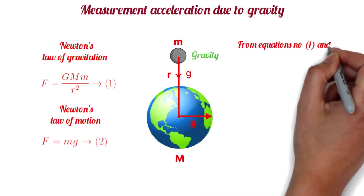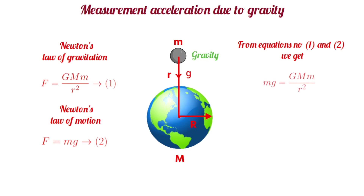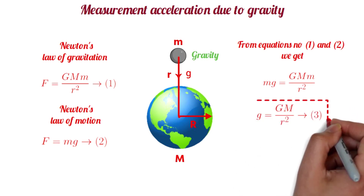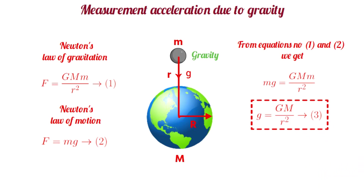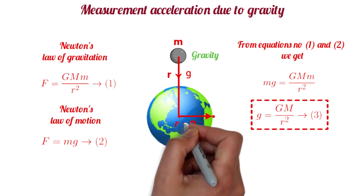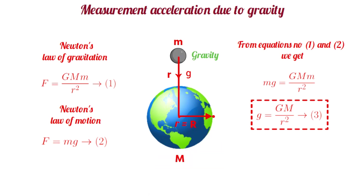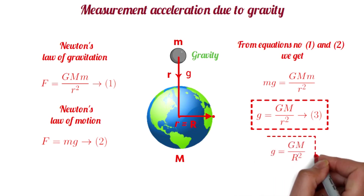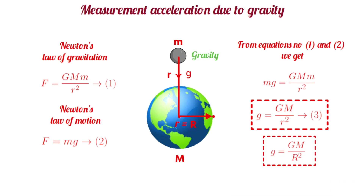From equations number 1 and 2, we get mg is equal to GmM by R square. Now solving this equation we get g is equal to GM by R square. This is the formula for the measurement of the acceleration due to gravity. For any point on the surface of the Earth, small r is equal to capital R. So we can write g is equal to GM by capital R square. This is the formula for measuring the acceleration due to gravity on the surface of the Earth.